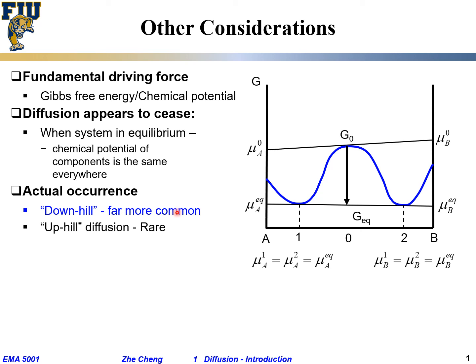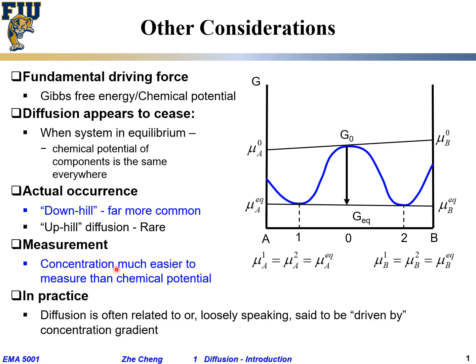And in terms of measurement, can we easily measure concentration or can we easily measure chemical potential? Of course, concentration. We can do that by nowadays SEM, used to be ICP, or some other method. So quite often people talk about diffusion based still by concentration. It's easier to measure, so it's easier to refer to.